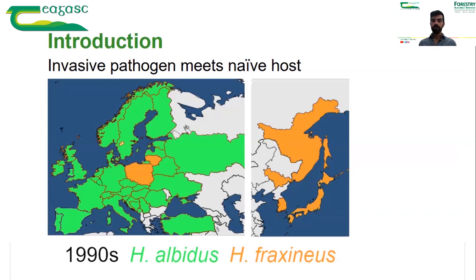On the left we have a map of Europe and on the right we have a map of eastern Asia. Before the 90s, Hymenoscyphus fraxineus was only found in eastern Asia, and Hymenoscyphus albidus was found in Europe.